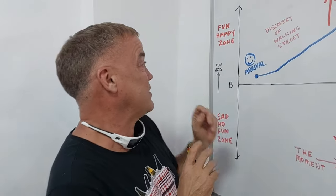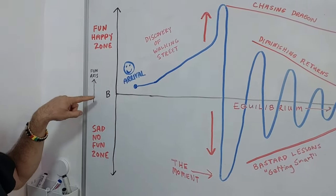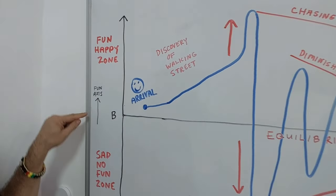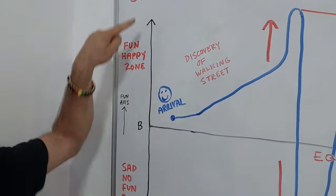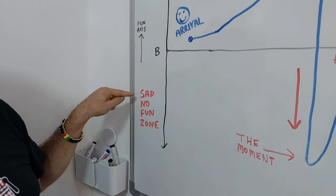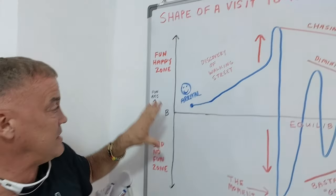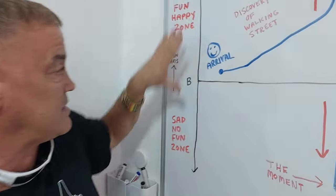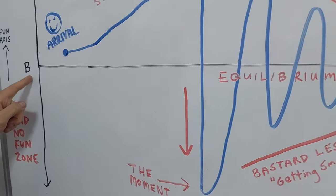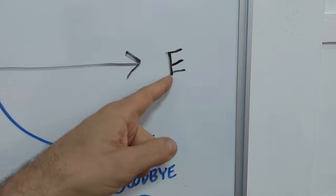There's two axes. I did a chart here. We have the fun axis, fun happy zone, and then down here is the sad no fun zone. So happy, sad, and then you know this is the vertical. Then horizontal, we have the beginning and we have the end.